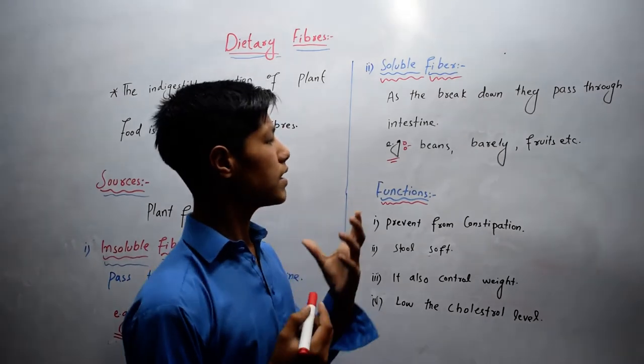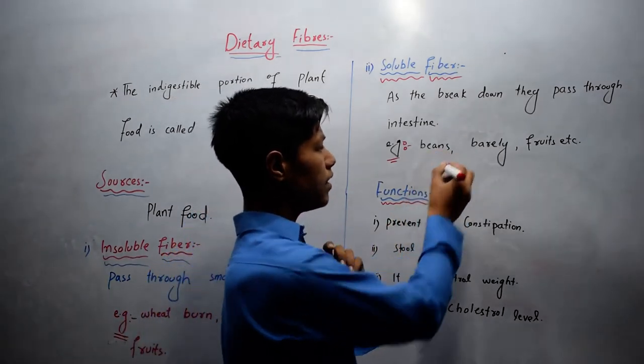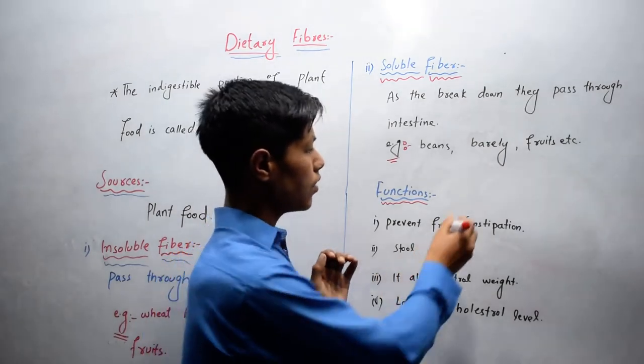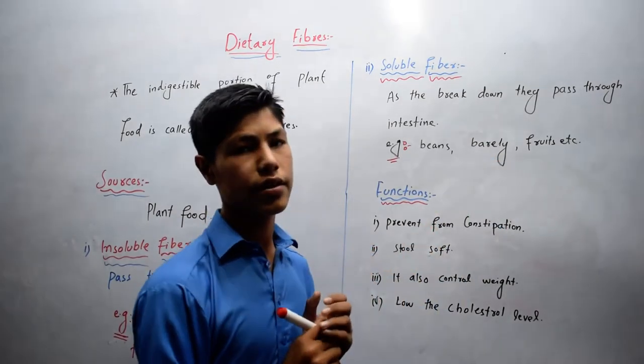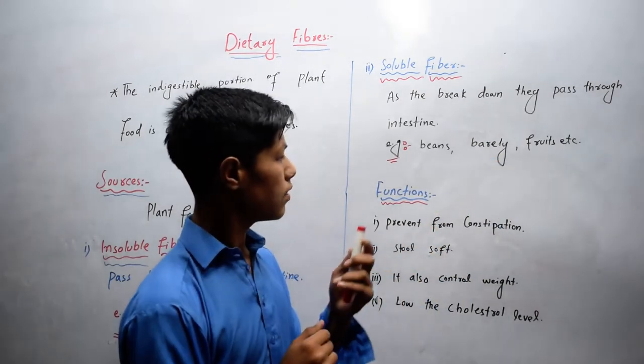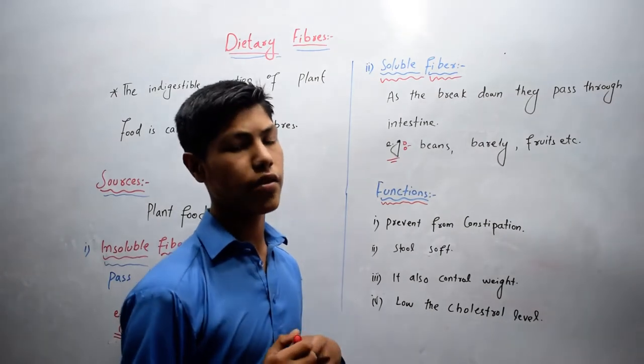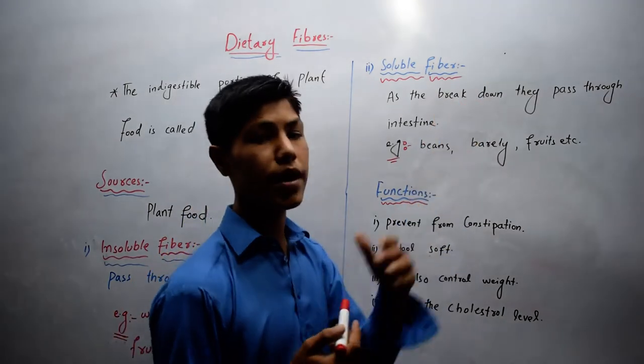And the sources are beans, barley, vegetables, fruits, etc. These all are the sources of soluble fiber.